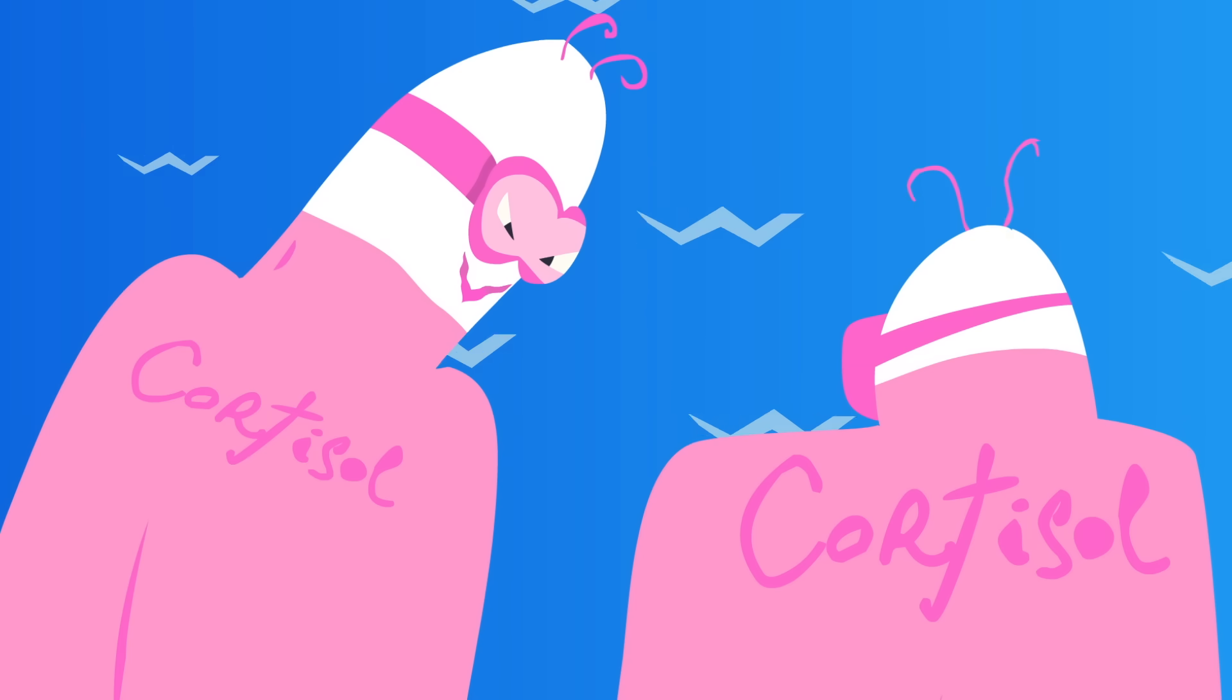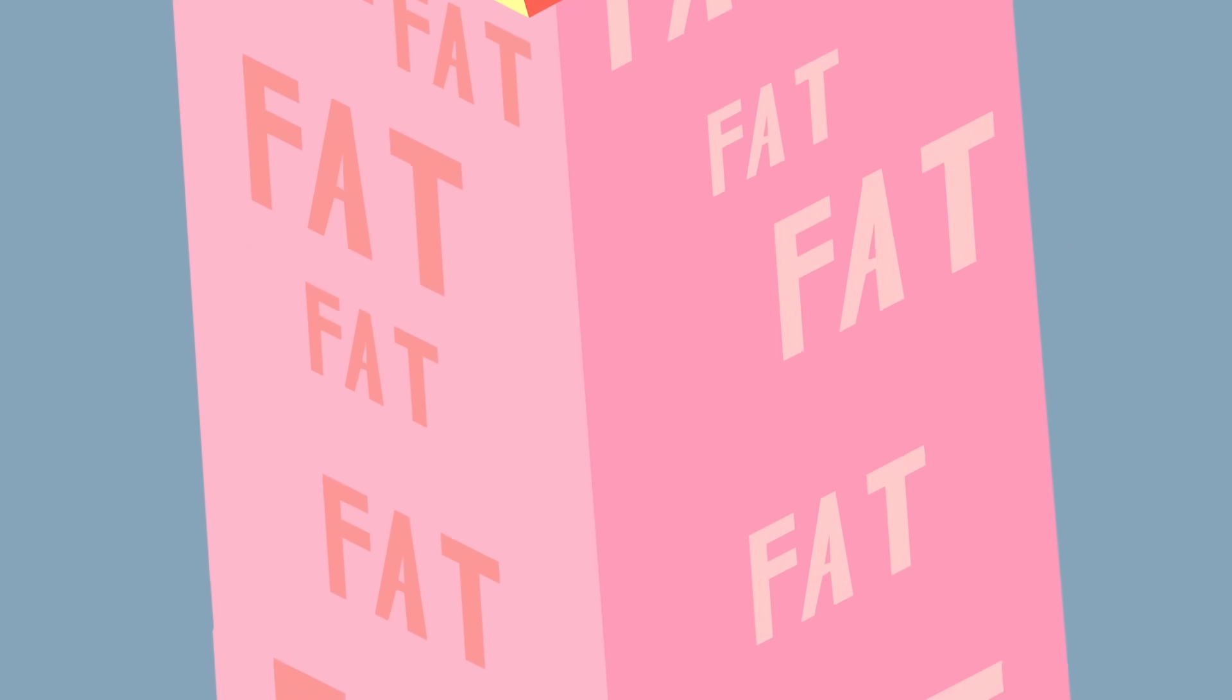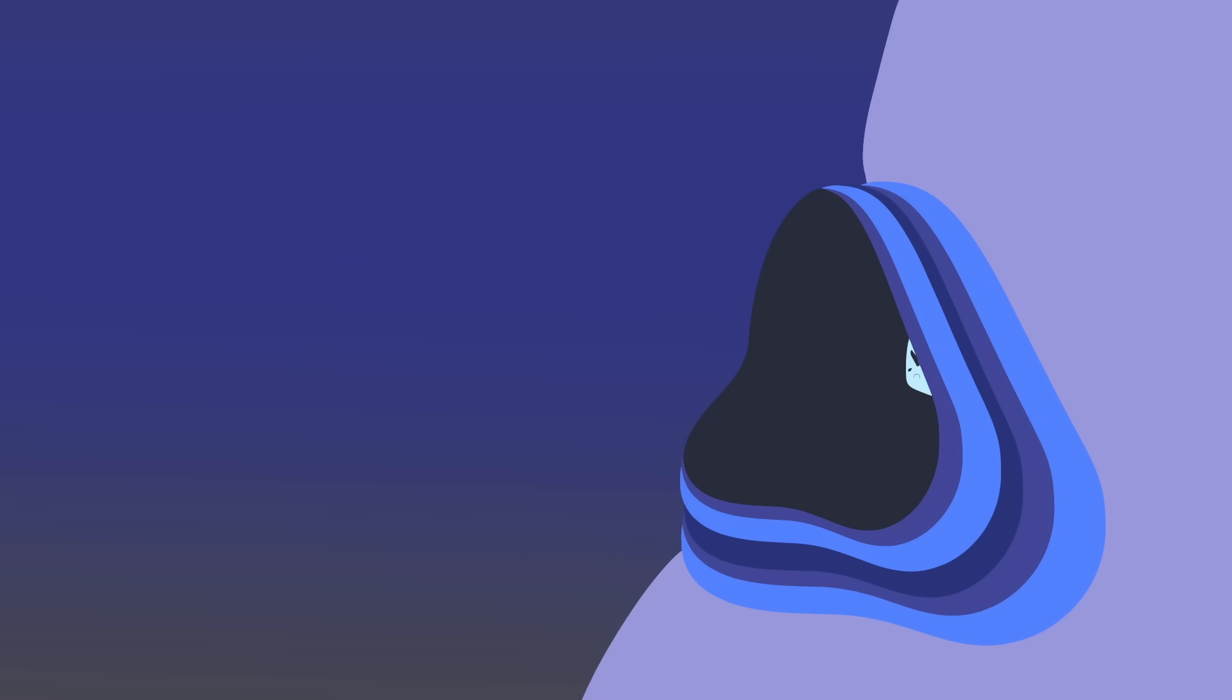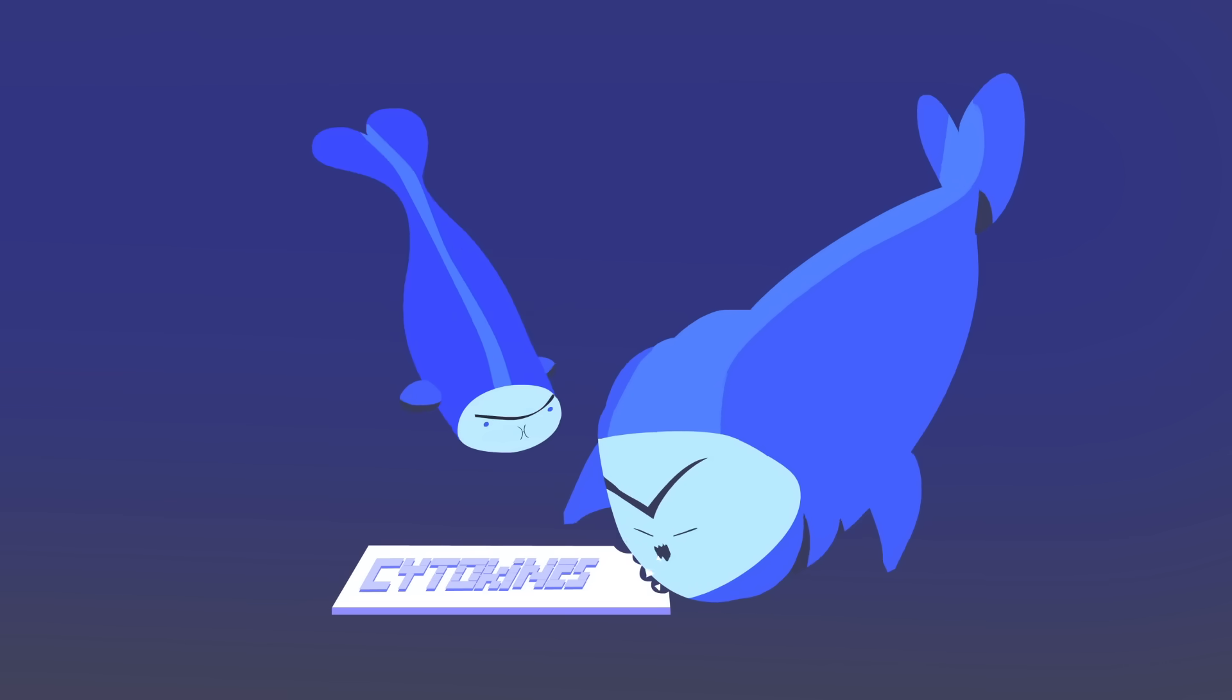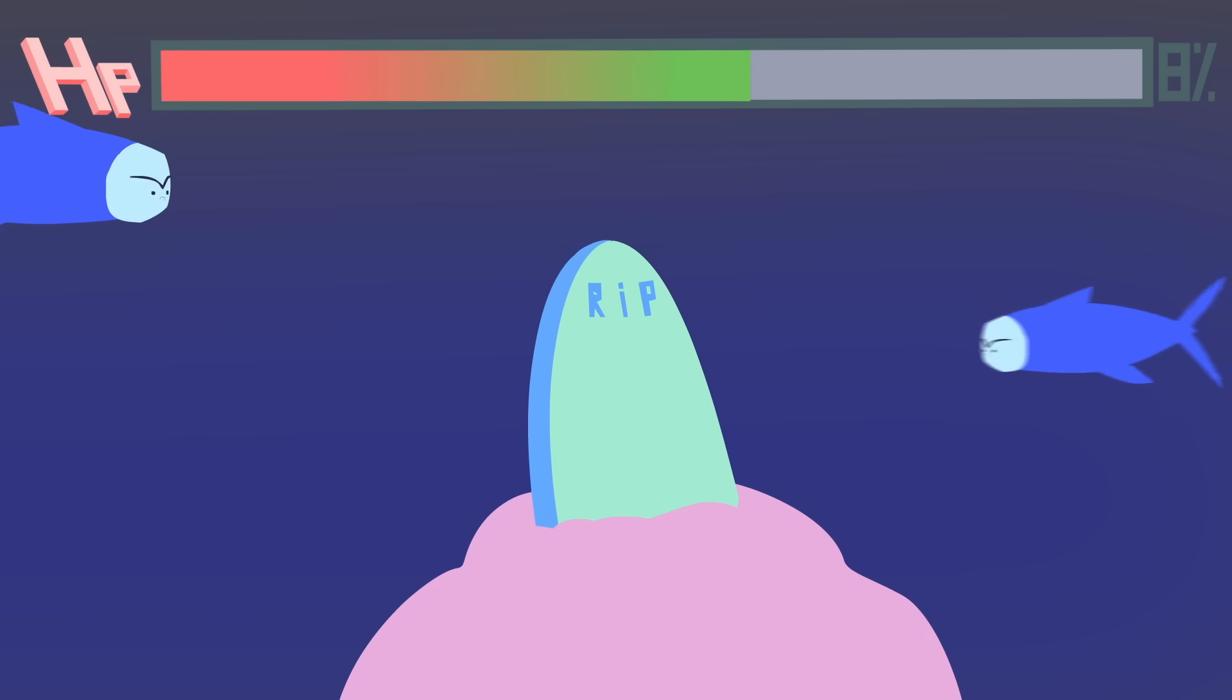High levels of cortisol can also cause you to put on those extra calories as visceral or deep belly fat. This type of fat doesn't just make it harder to button your pants. It is an organ that actively releases hormones and immune system chemicals, called cytokines, that can increase your risk of developing chronic diseases, such as heart disease and insulin resistance.